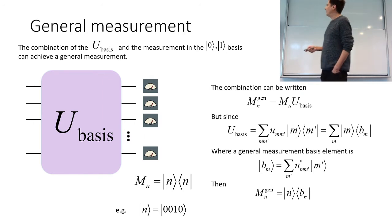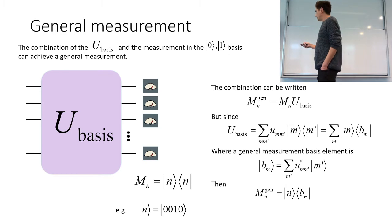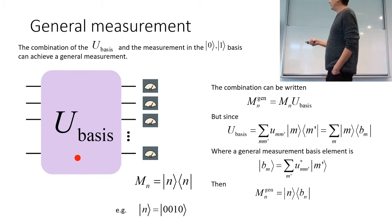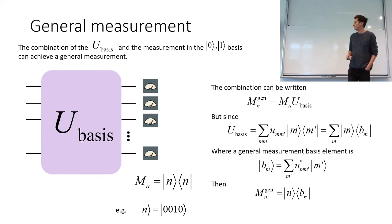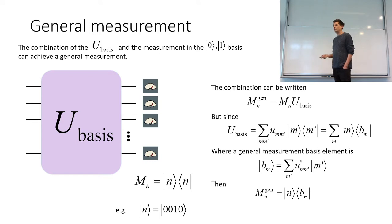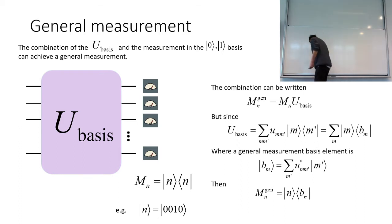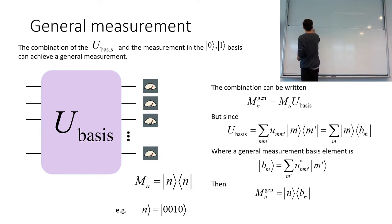I gave you the general proof of why this combination of the basis and the measurement is equivalent to a general measurement. Making a measurement in the zero-one basis is not a restriction because we can have some rotation just before the measurement, equivalent to measuring in a different basis. Let me do a simple example of this for a qubit.